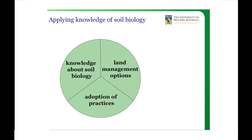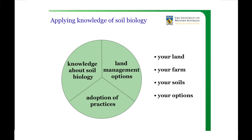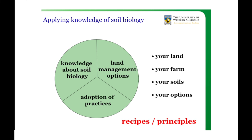So what we've got is some knowledge of soil biology, a series of land management options, and then there's you — dealing with what you do on a daily basis with a dollar sign involved. Your land, your farm, your soils and your options are all different. So what you do depends on your own circumstances. There are recipes, but there are also principles that can be applied across this — the recipes might not work for you, but some aspects of them might.